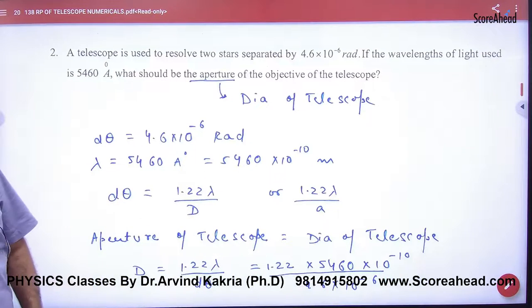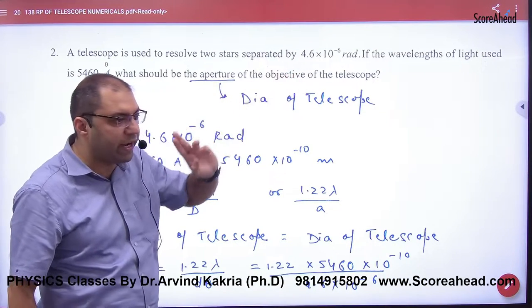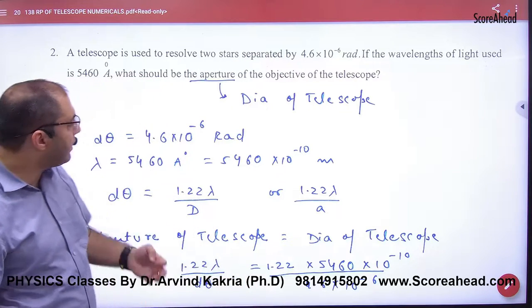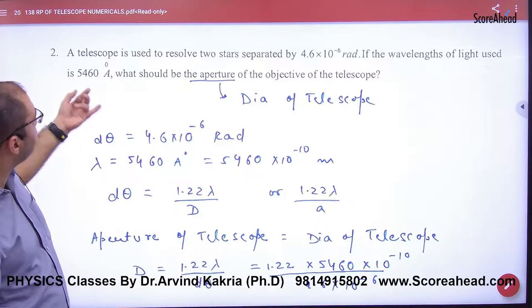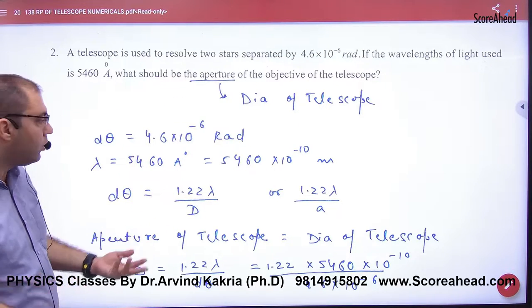Telescope is used to resolve two stars separated by so many radians. Now what is given? Delta theta is given. Delta theta is given, the wavelength of light lambda is also given. Aperture is given. Aperture means diameter is given.